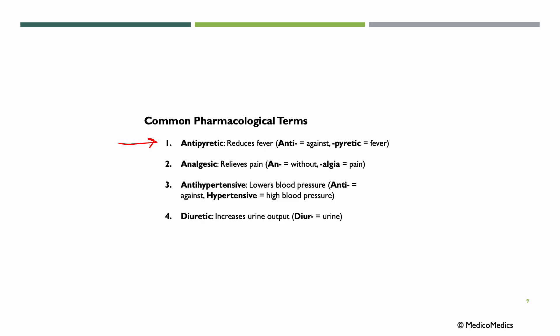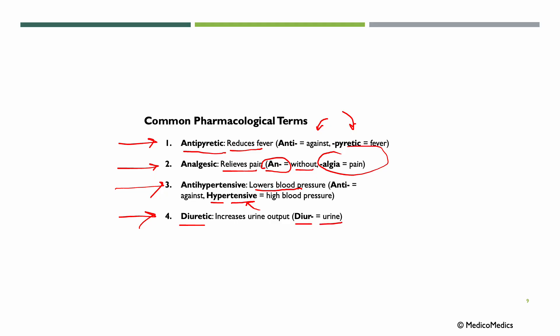Common pharmacological terms include antipyretic, meaning reducing fever — 'pyretic' is fever, 'anti' is against, so against fever. Analgesics relieve pain — 'an' means without, 'algea' means pain, so analgesics are medications used to relieve pain. Anti-hypertensives lower blood pressure — 'hyper' means high or above, 'tensive' means tension, so anti-hypertensives work against high tension. Diuretics increase urine output — 'diur' means urine.